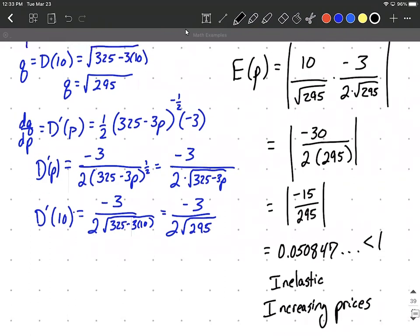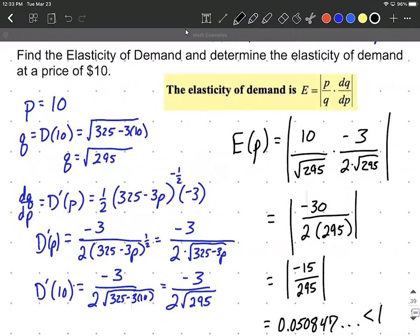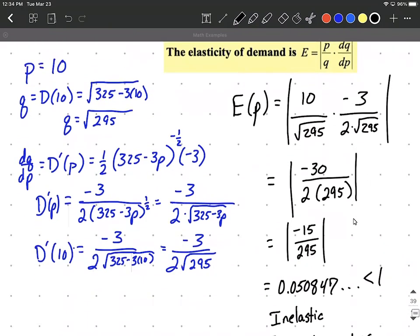Alright, I hope this helps out. A little bit of work going into this, but you know, take it one step at a time. What you want to do is make sure you know your price, evaluate that to get your quantity that's going to be sold, and then take the derivative of your demand function and plug in your value, get some number coming out here, plug them all one at a time into your formula, and then get out that calculator and compare it to one. See if it's smaller than one, bigger than one, or equal to one. Alright, hope this helps.